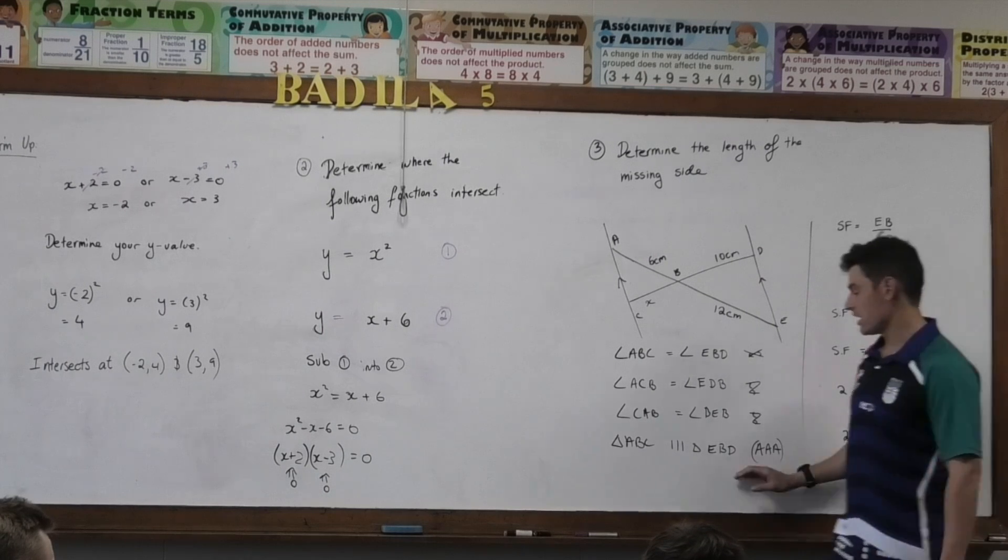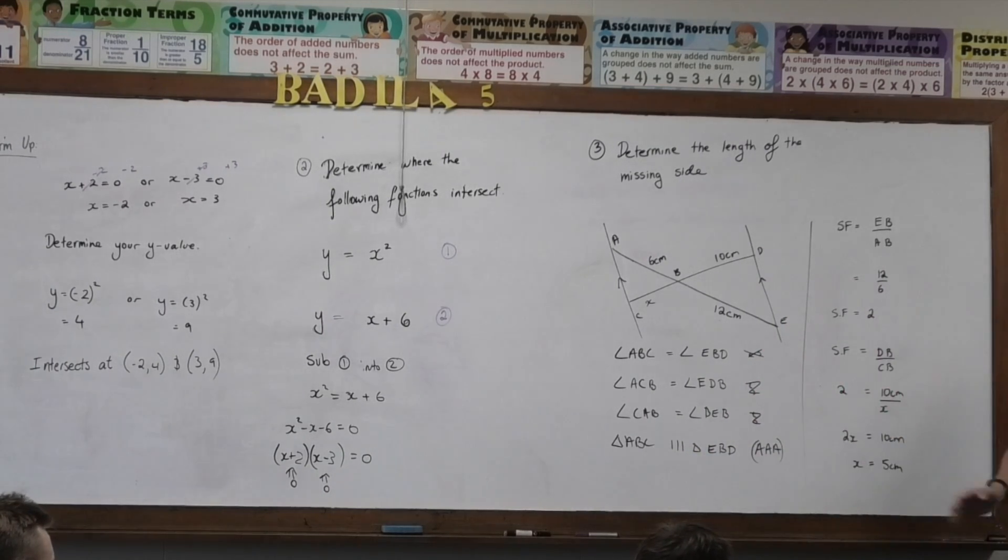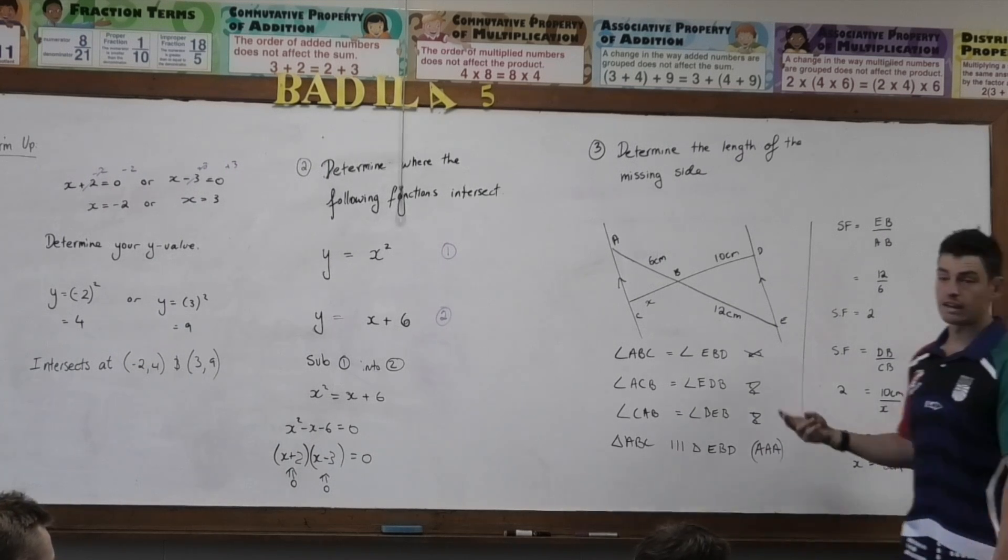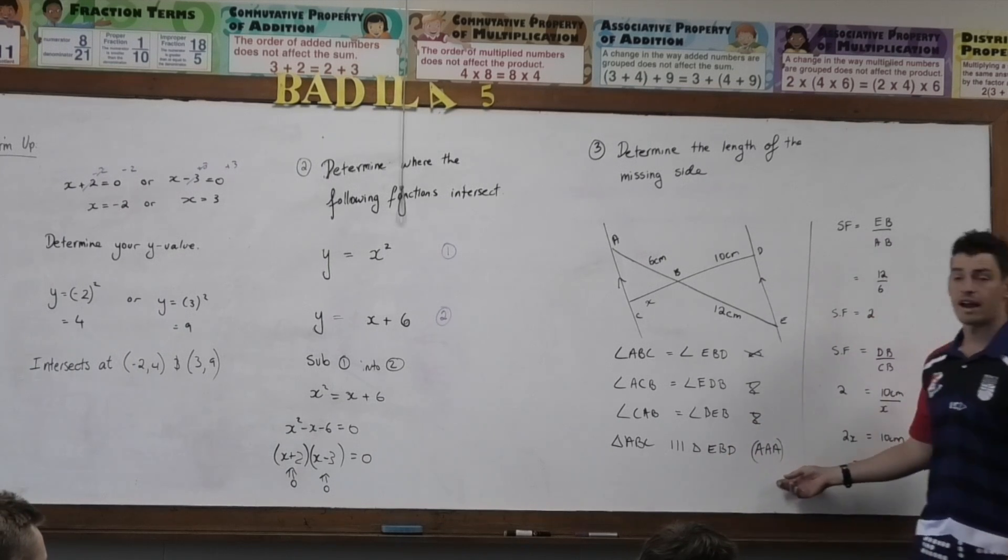Why can't I use any other proof? I have to use that proof. I've got no other option here. Why must I use that proof? We need at least two sides to prove similarity, correct? So, the only proof I could possibly use is AAA.